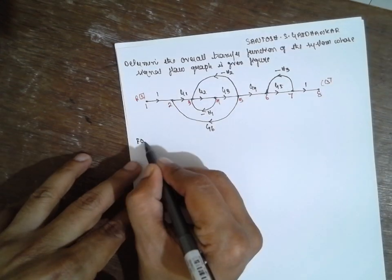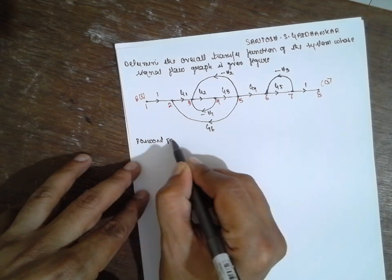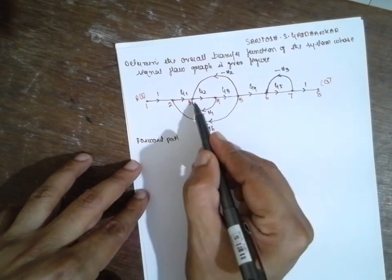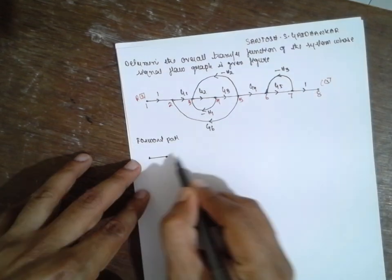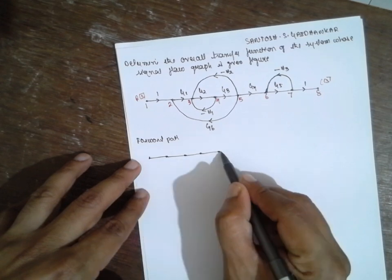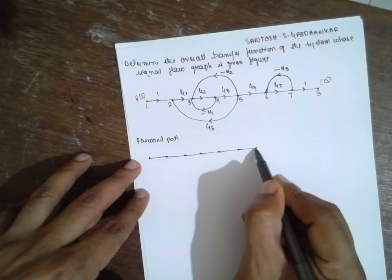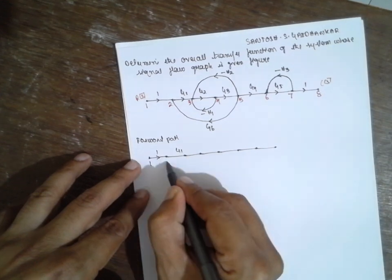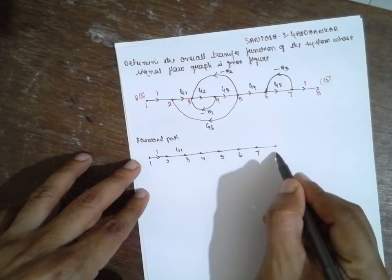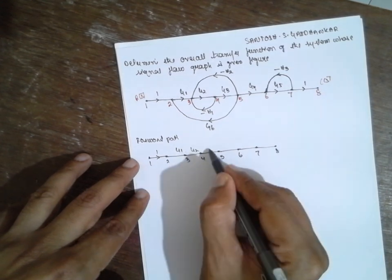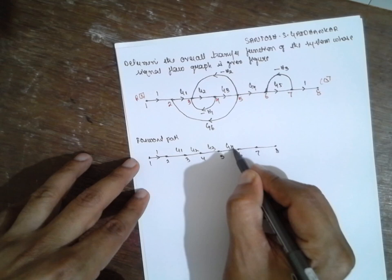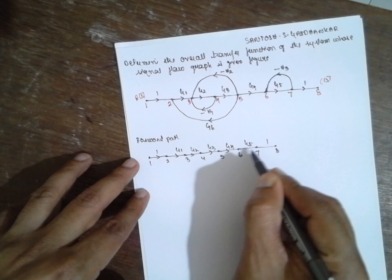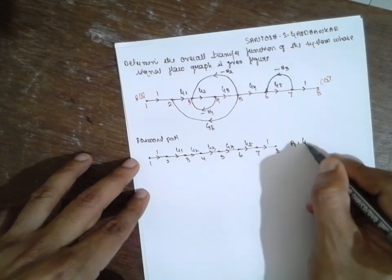This is the forward path here. Apart from this one, there is no other forward path. The forward path passes through nodes 1, 2, 3, 4, 5, 6, 7, 8 with gains G2, G3, G4, G5, and 1. Therefore, P1 is equal to G1 · G2 · G3 · G4 · G5 · 1.